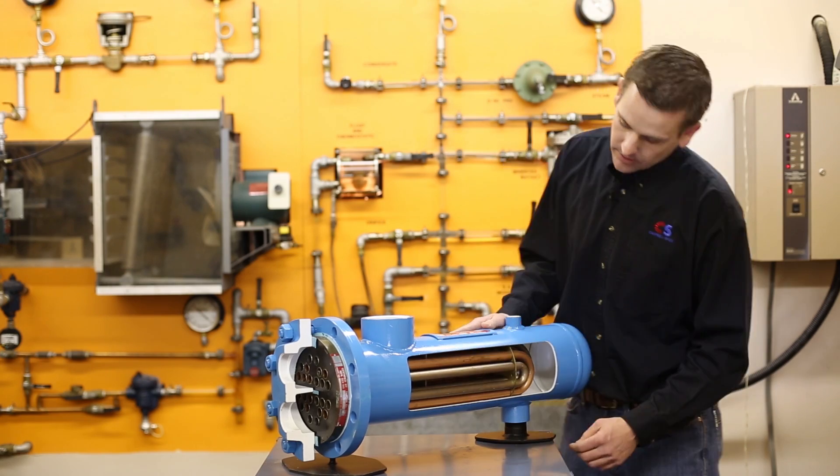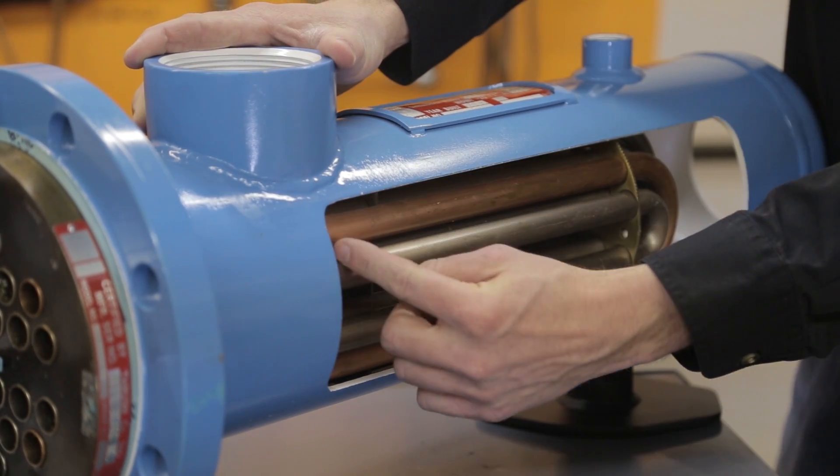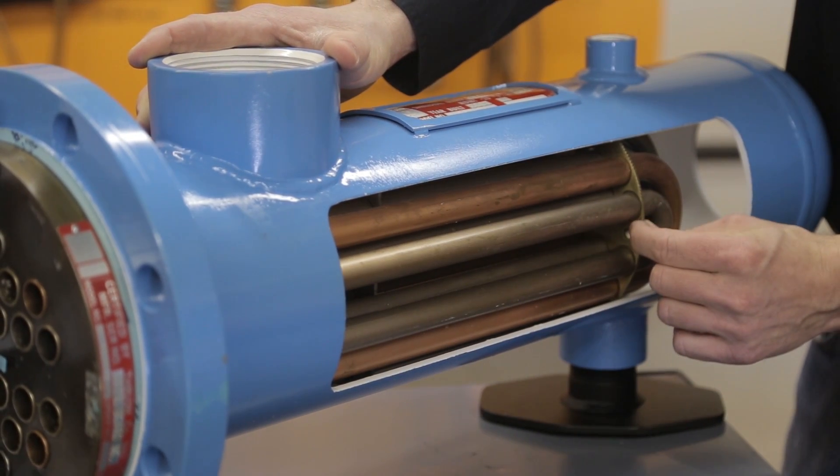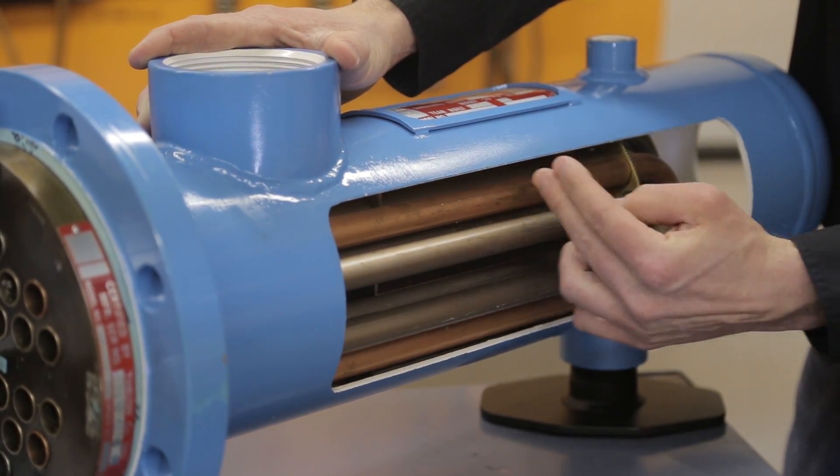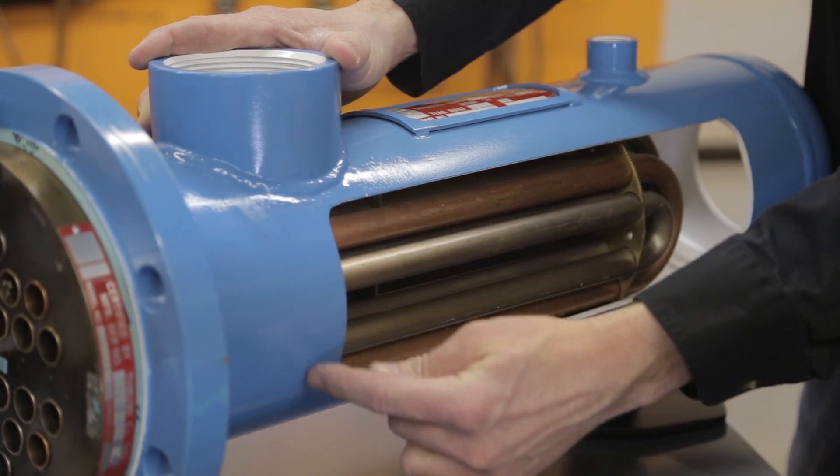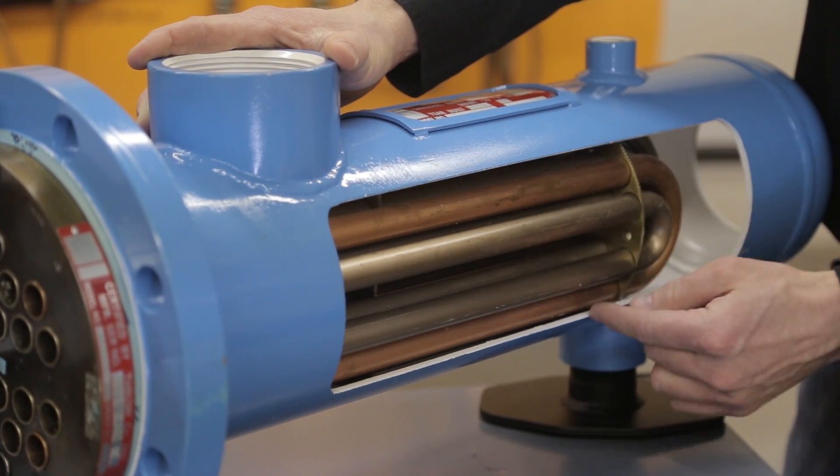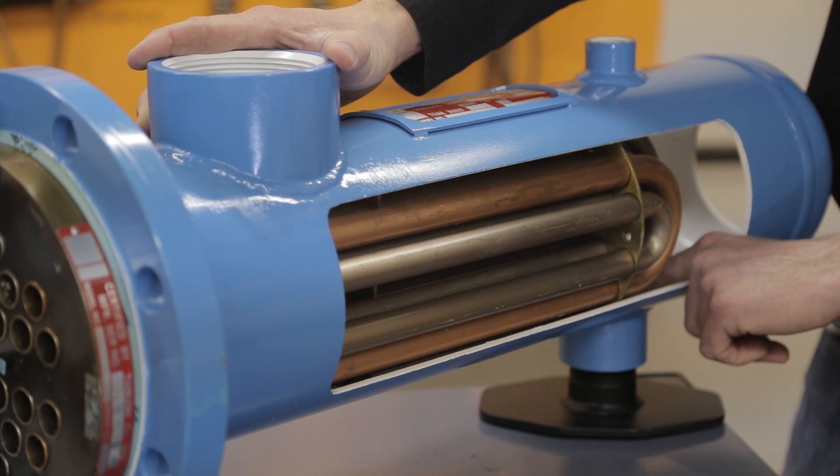Steam comes in here. You can see in this small cutaway unit we only have one baffle, and then as we get larger in size we'll have multiple baffles. That steam will go in, travel across the tubes, and the baffles will redirect it.